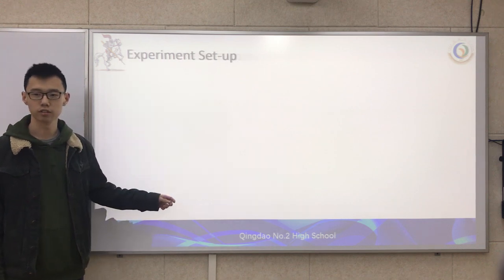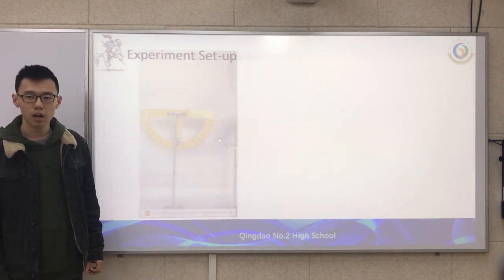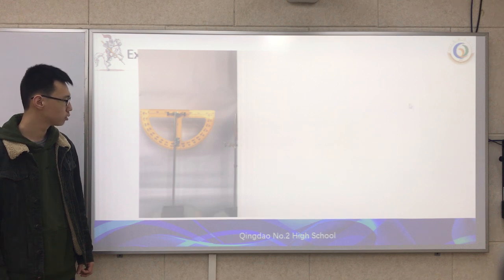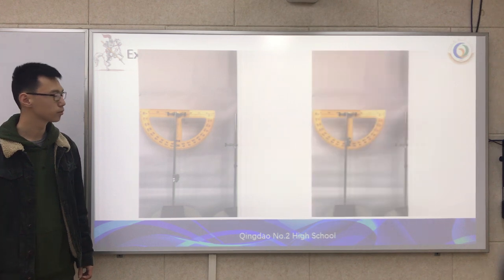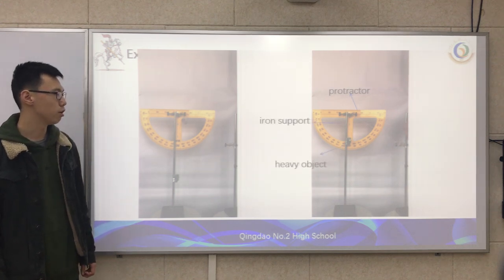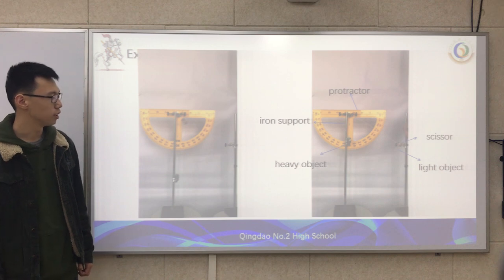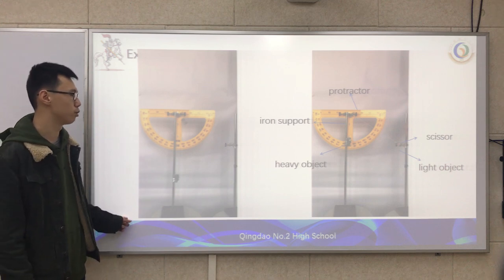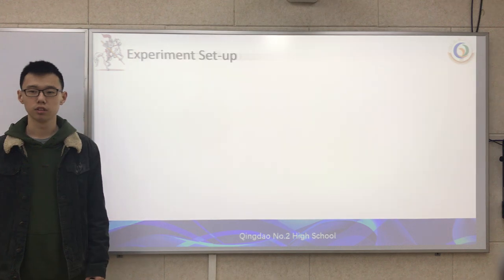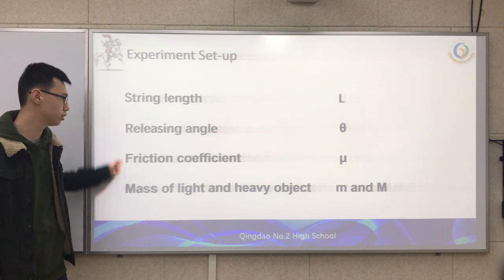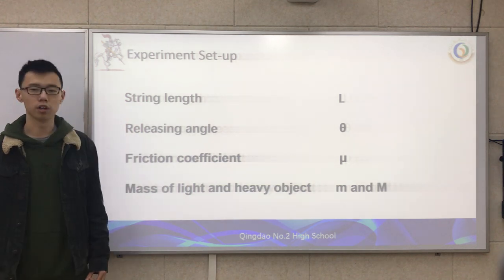This is a video of our experiment. We have a protractor to control the release angle, and a rod with error stops. The heavy object and the light object are shown — the light object is held by a rubber band on another error stop. We use scissors to cut the rubber band to release the light object. According to our equation, we need to find five values to solve the equation.